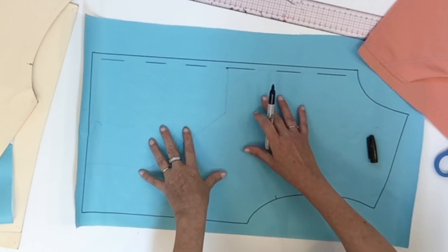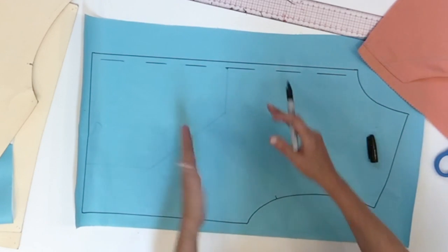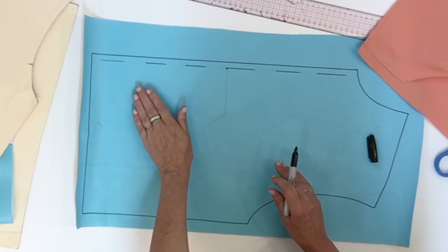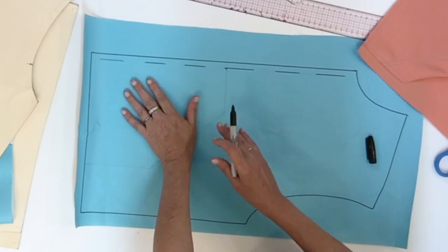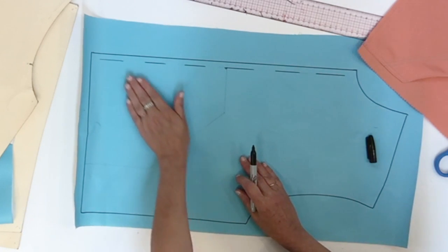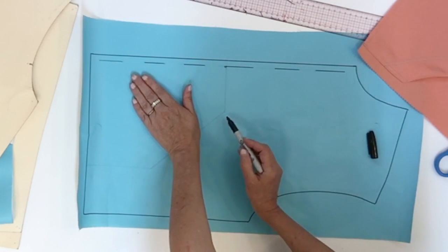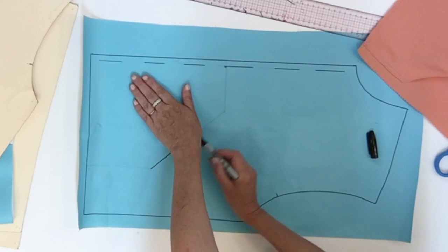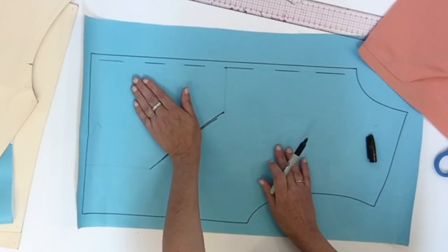To find the placement of your pocket, you could put the pattern on yourself and just put your hand on the front to make sure that your pocket is going to be comfortable and at the right angle, and just trace a line where you want the opening.